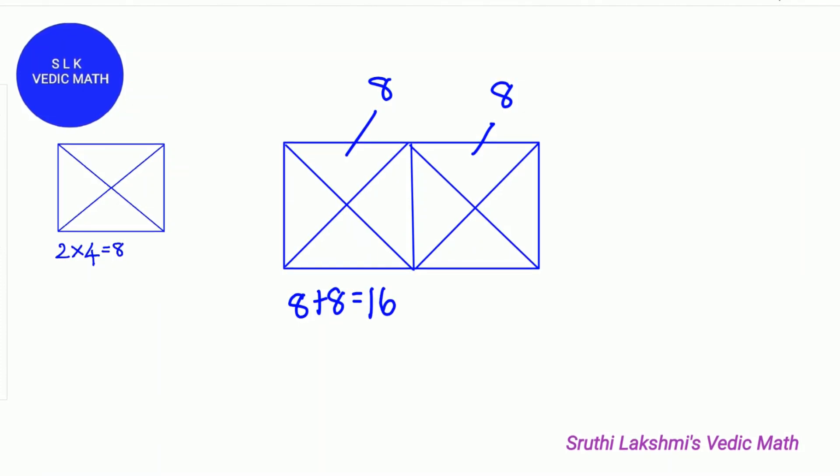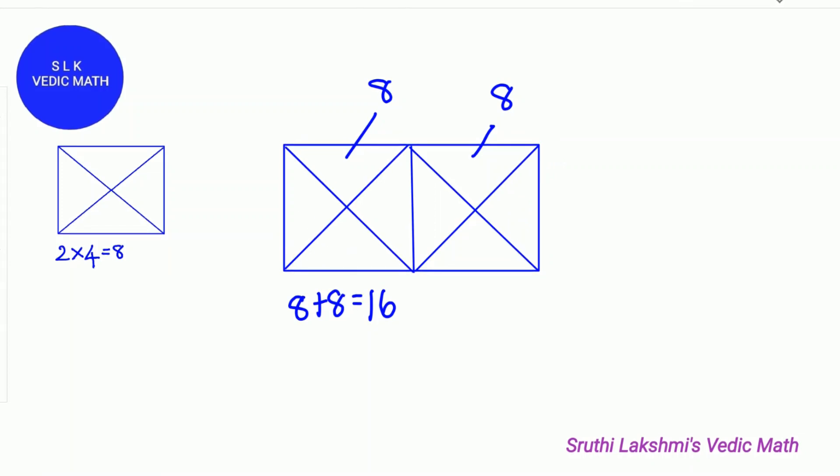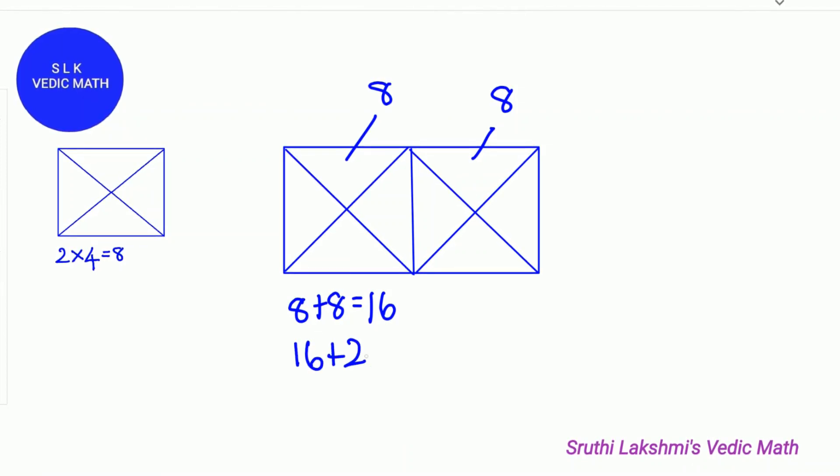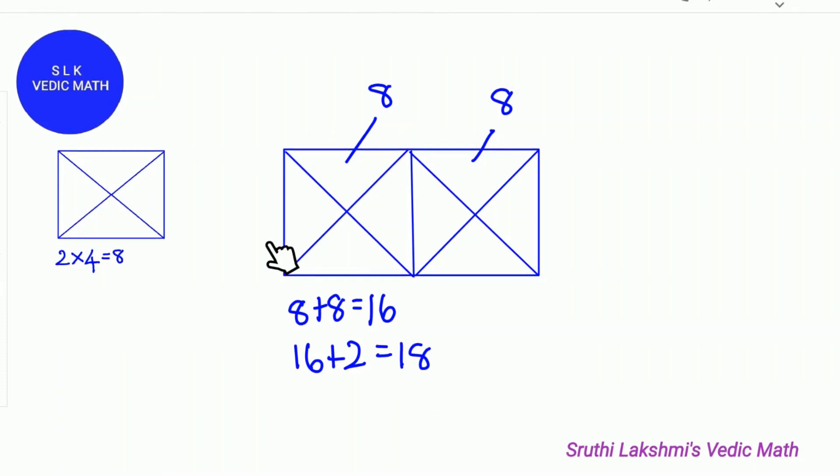But we are not over here. We still have 2 more triangles because these 2 are combined. So 1 triangle and 2 triangles. So we add 16 plus 2. 16 plus 2 is 18. So there are 18 triangles in this rectangle.